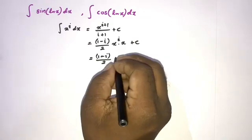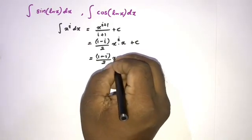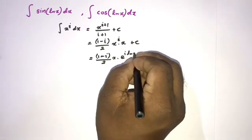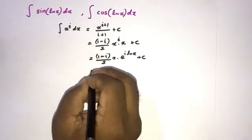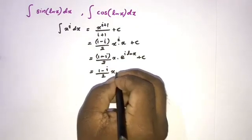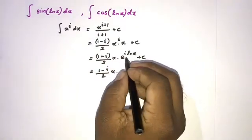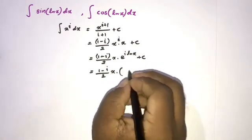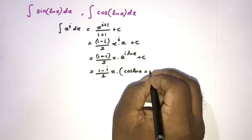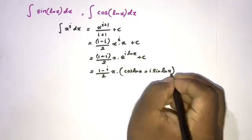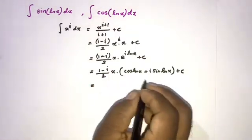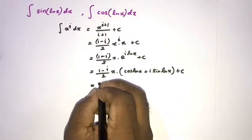Now we write (1 minus i) over 2. Instead of x^i, we write e^(i times natural log of x) plus c. By Euler's formula, e^(i·ln x) equals cosine of natural log of x plus i times sine of natural log of x, plus c.